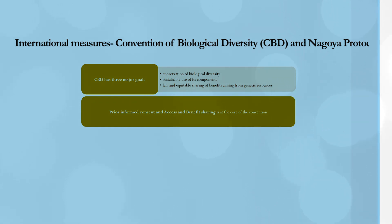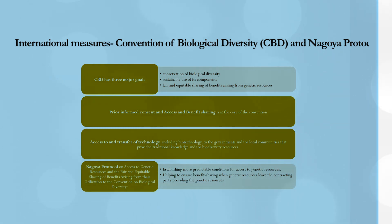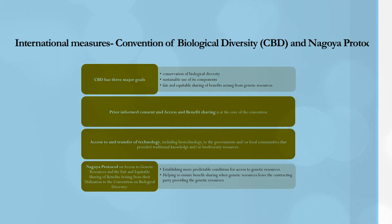The Convention on Biological Diversity also addresses access and transfer of technology, including biotechnology, to the governments and local communities that provide traditional knowledge or biodiversity resources. These provisions are not limited to monetary access and benefit sharing but may also involve technology transfer requirements. The Nagoya Protocol on access to genetic resources and fair and equitable sharing of benefits arising from the CBD specifically establishes a framework providing predictable conditions for access to genetic resources and for how benefit-sharing agreements between contracting parties can be structured.